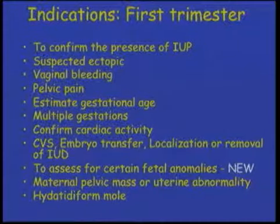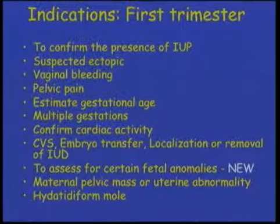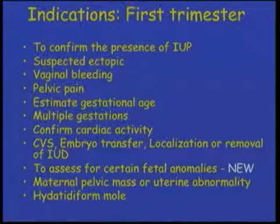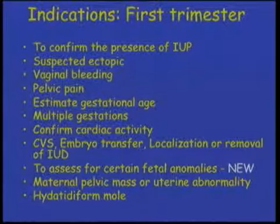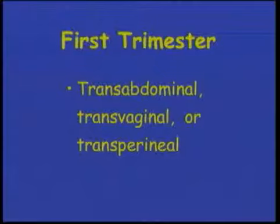The indications for first trimester scan include: confirming the presence of intrauterine pregnancy, suspected ectopic pregnancy, vaginal bleeding, pelvic pain, estimated gestational age, multiple gestations, confirmed cardiac activity, chorionic villus sampling, embryo transfer, and localization or removal of an IUD. Assessing for certain fetal anomalies was added new in the 2007 guidelines — we now recommend that fetuses be screened for anomalies in the first trimester. Also included are pelvic masses in the mother, uterine abnormalities, and possible hydatidiform mole.